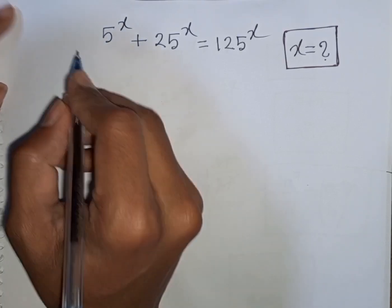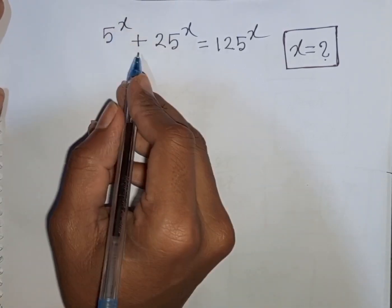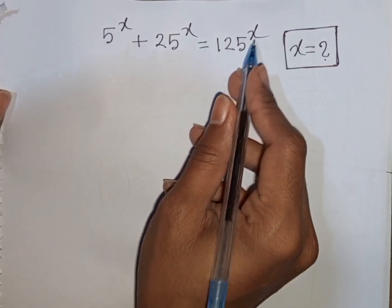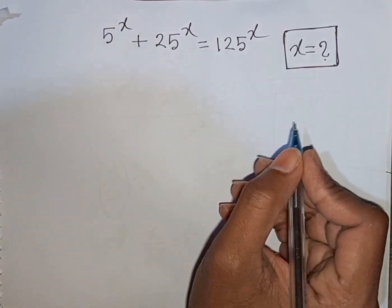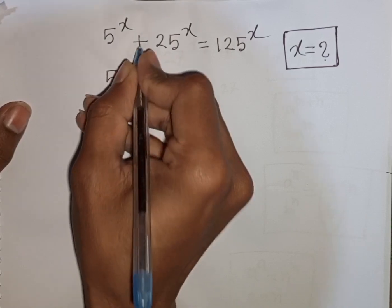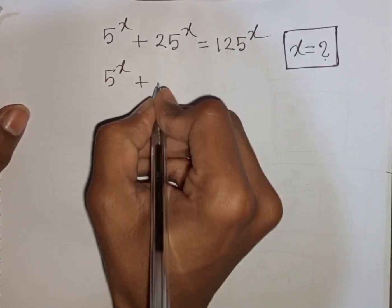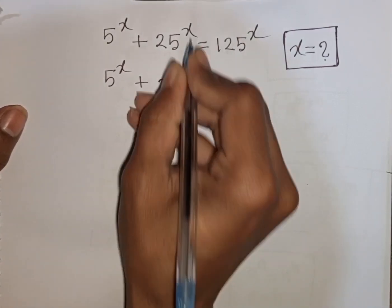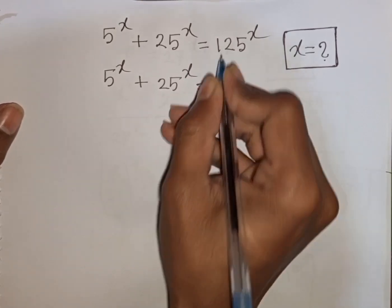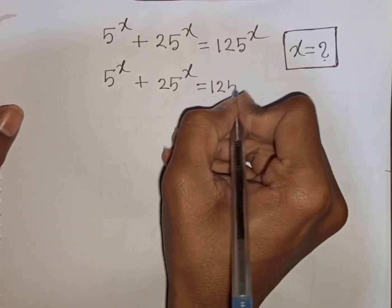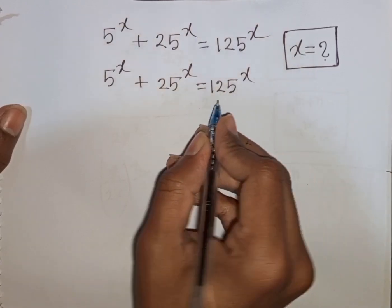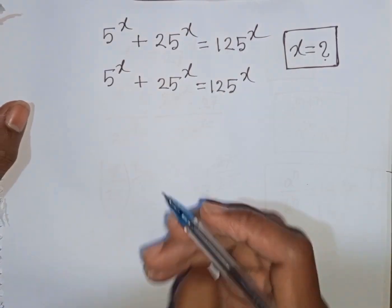How to solve 5^x + 25^x = 125^x. Find the value of x. We have 5^x + 25^x = 125^x. Now we divide both sides by 125^x.